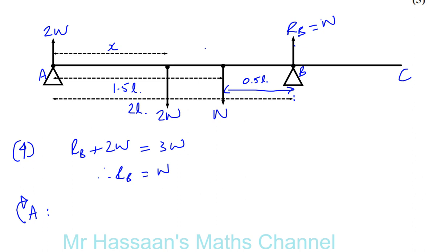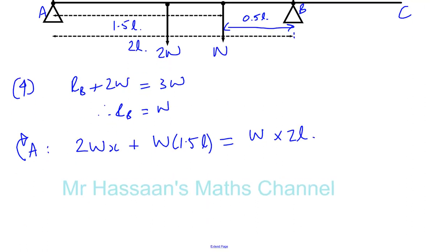We can say that the clockwise forces are 2W times x. 2W times x. Okay. And this is also a clockwise force, which is plus W times 1.5. 1.5L. Okay. And then, the anticlockwise force is going to be this, the moments of the reaction of B about A. So, that's going to equal there, because it's in equilibrium. It's going to be W times 2L. That's 2L, that distance. Okay. And now, we can find what x is.